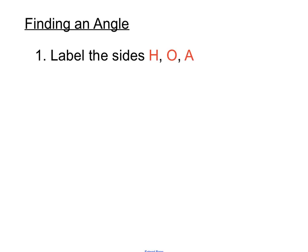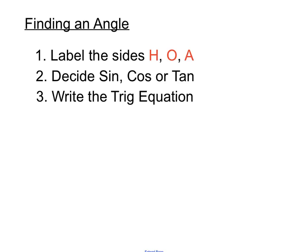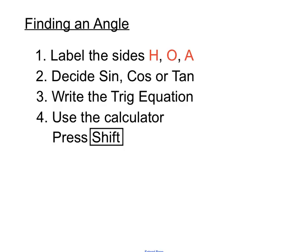We'll label the sides hypotenuse, opposite, and adjacent first. We'll then decide whether it's a sine, cos, or tan question depending on the sides involved. We'll write out our trig equation in a very similar way, then use our calculator. The special variation for finding an angle is that we press Shift as part of the trig ratio entry — so instead of cos, we press Shift Cos. Then we round off to the nearest degrees, minutes, and seconds using the degrees, minutes, and seconds button.